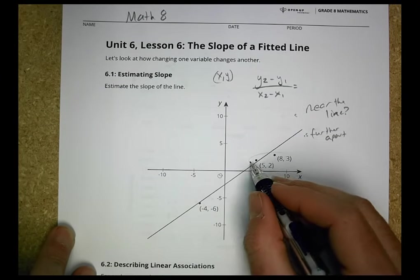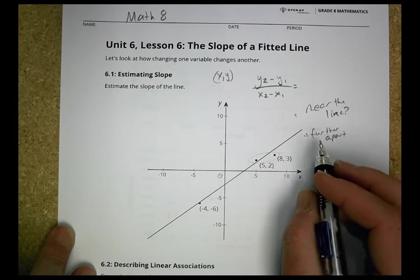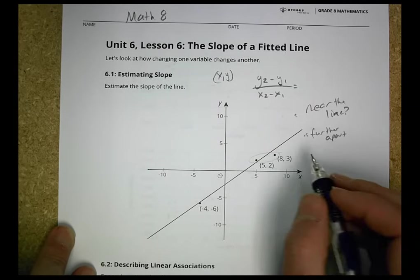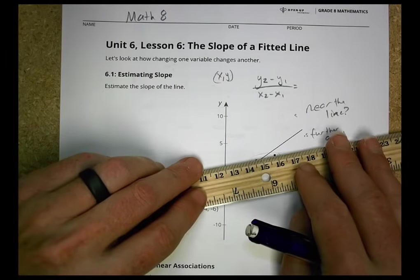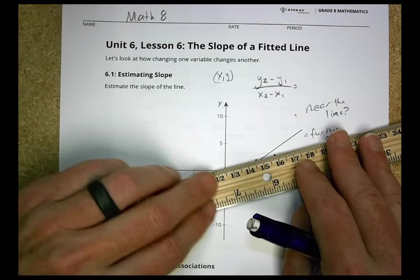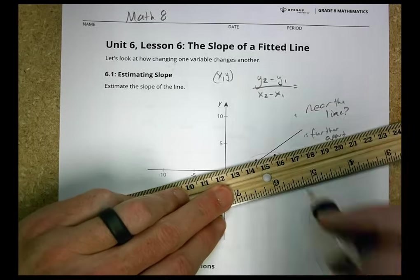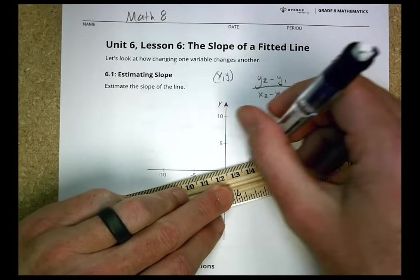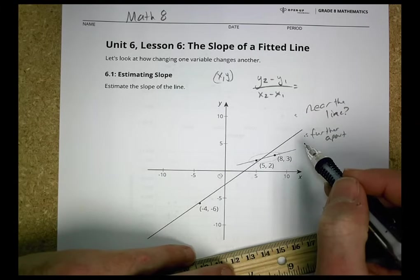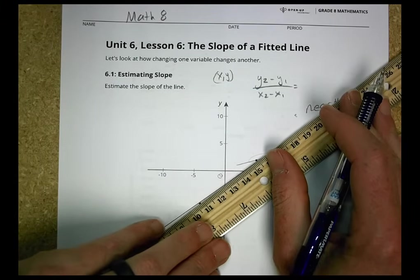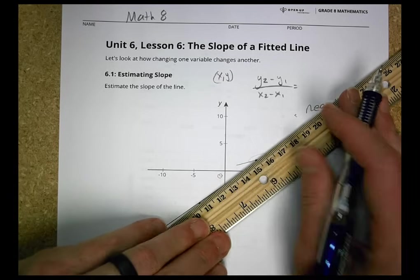You're going to get a more accurate slope if you pick points that are further apart. Like, for example, if you pick these two, these two are so close together that you're not going to get a big difference. And think of it this way. What if you drew a line between those two points? That would be your slope. Your slope would be right here. How does that line compare to this line right there? It's not the same. Not even close.